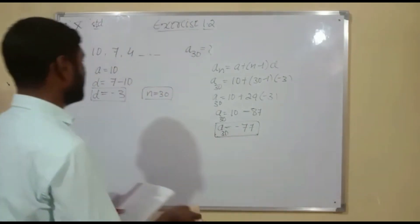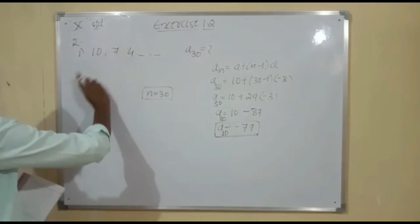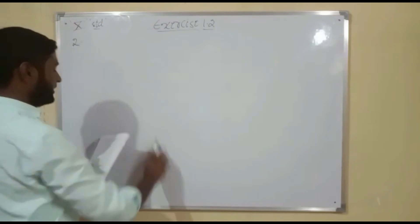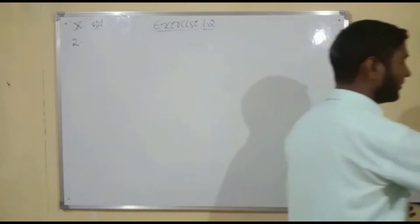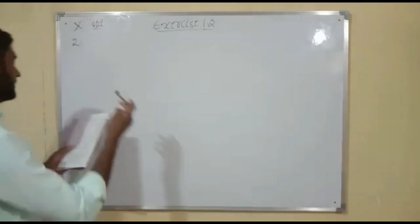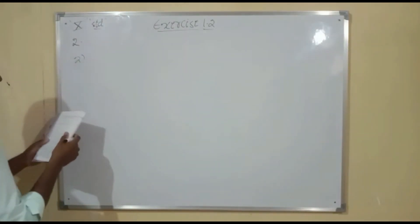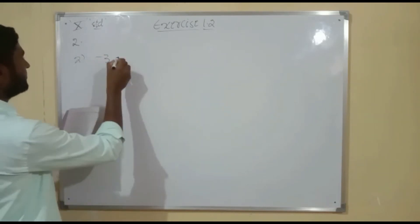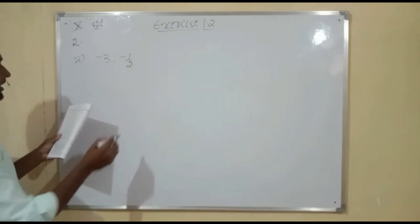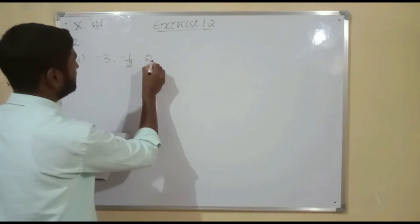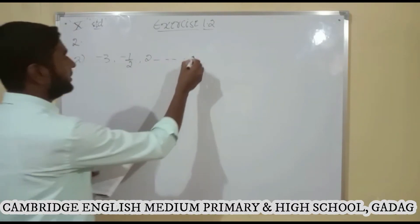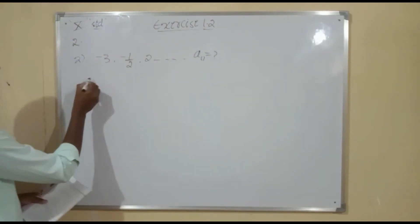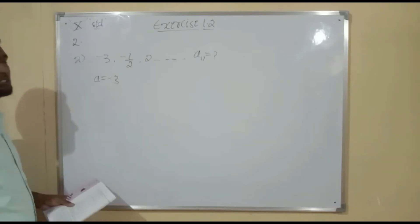Let us try the second example. The second question asks for the 11th term of the AP: minus 3, minus 1/2, 2, and so on. We need to find A11. Here, A is equal to minus 3.